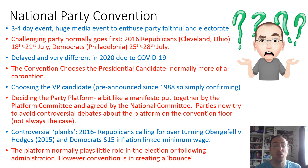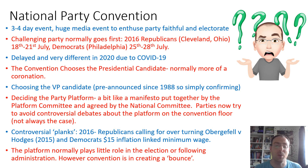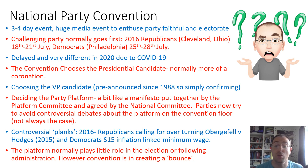The general idea is the convention is supposed to choose a presidential candidate, but it's normally more of a coronation — a celebration of the candidate rather than a genuine choice. They also choose the vice presidential candidate, but this has normally been pre-announced, largely since 1988, so it's simply confirming them. They also decide on the platform, which is a bit like a manifesto that we have in the UK, put together by the platform committee and agreed by the national committee.